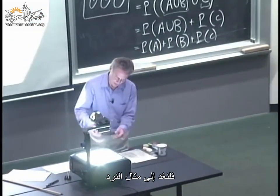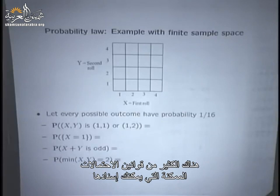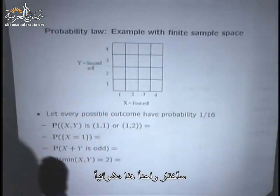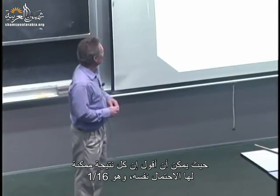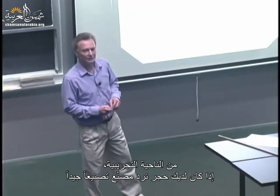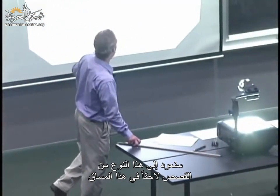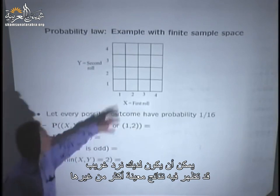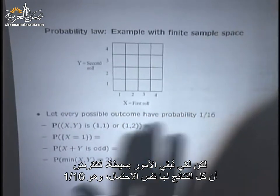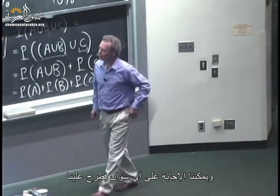Let's revisit our examples. Going back to the die example, we have our sample space. Now we need to assign a probability law. There are lots of possible probability laws; I'm picking one where every possible outcome has the same probability of 1/16. Why this model? Empirically, if you have well-manufactured dice, they tend to behave that way. Now, with the sample space and probability law in hand, we can answer any question that could be posed to us.